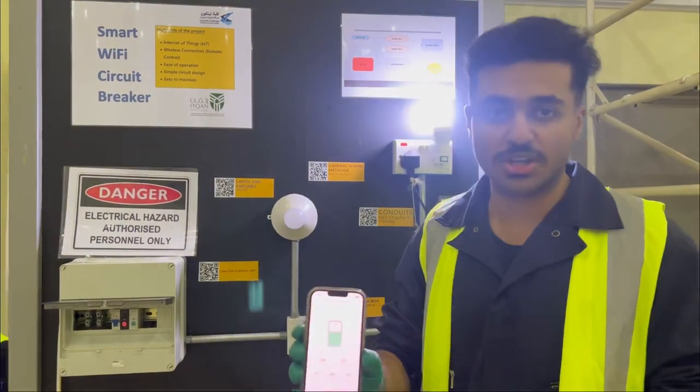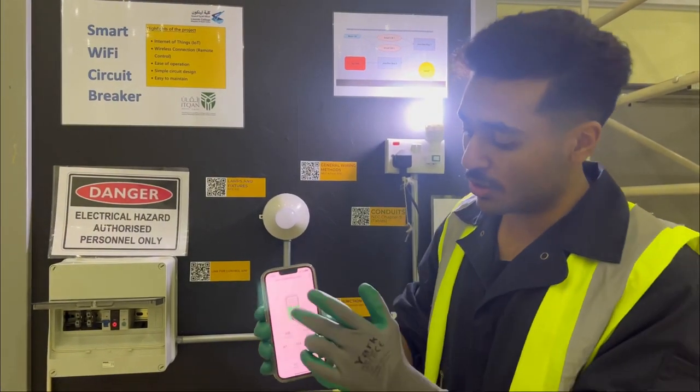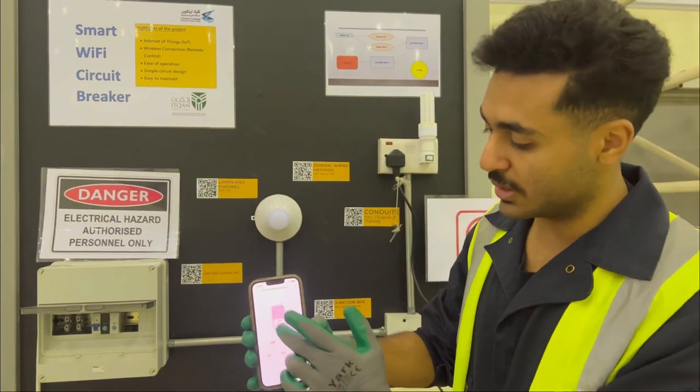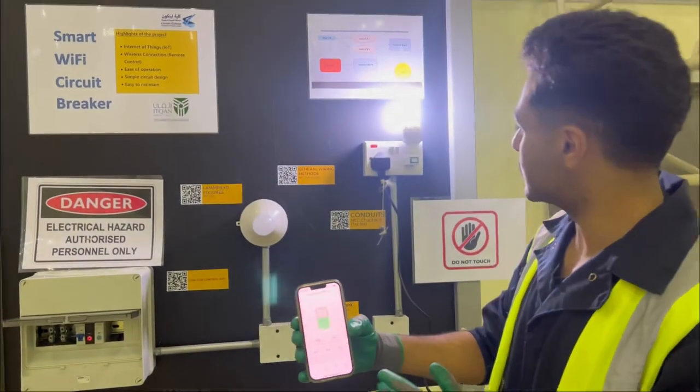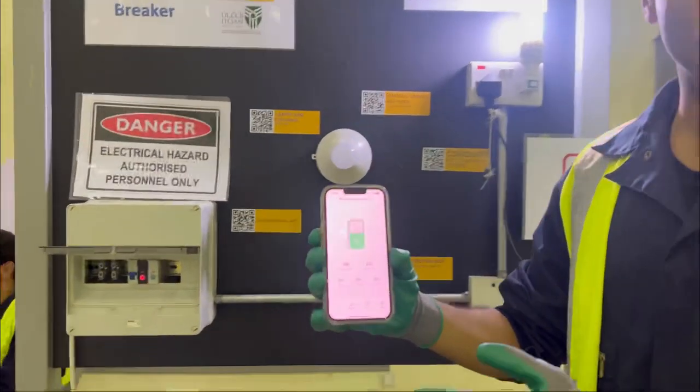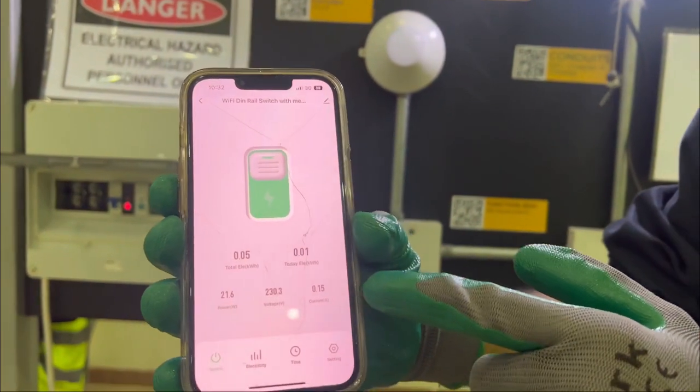We have here the application. You can turn on or turn off the light by using your phone like that, you can see here. Also, it gives you the readings for everything, for the current and for the voltage and power.